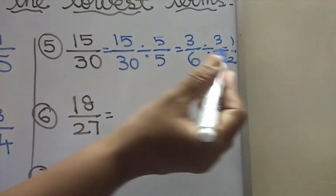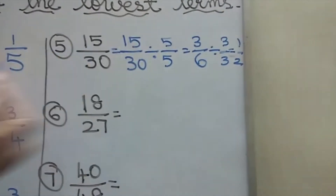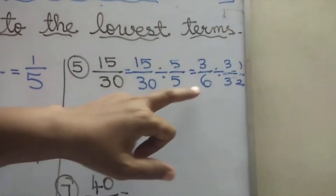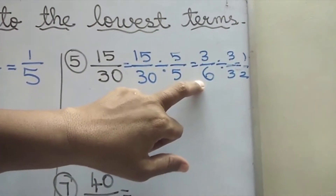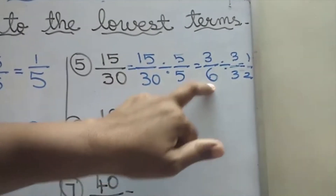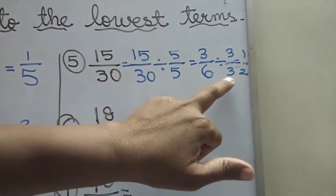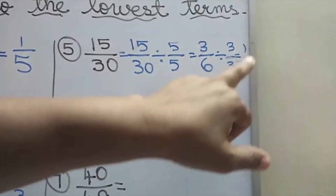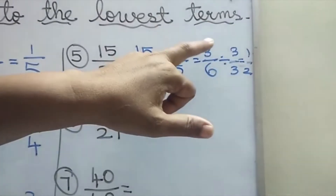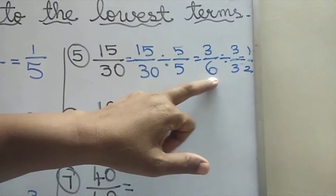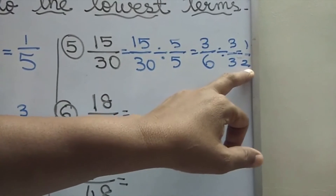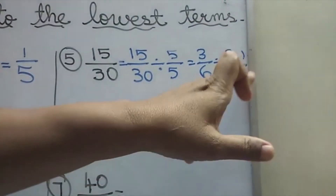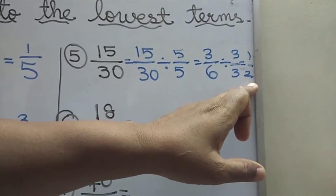It goes 2 times — it can be divided. So you have to bring it down to the lowest term. 1 by 2 — hereafter you can't divide. So this is the lowest term.